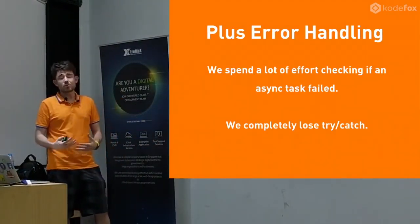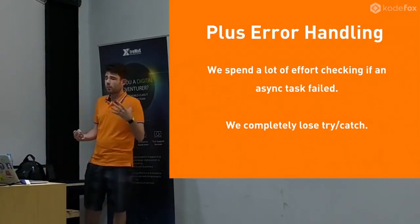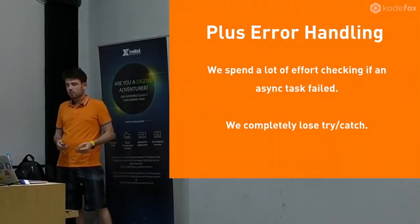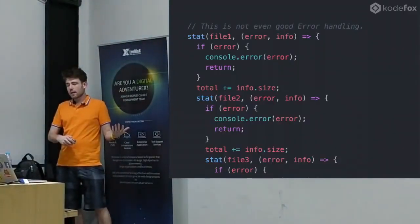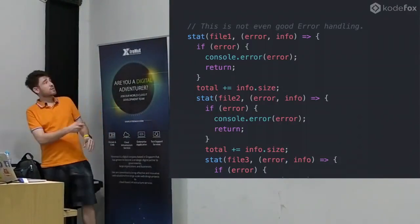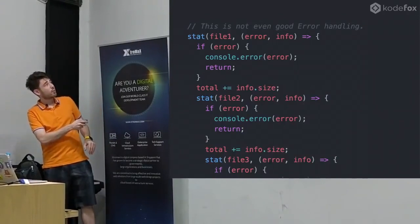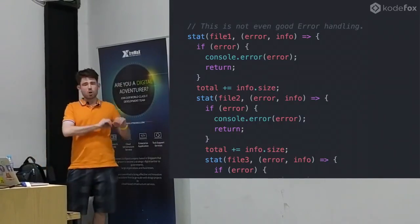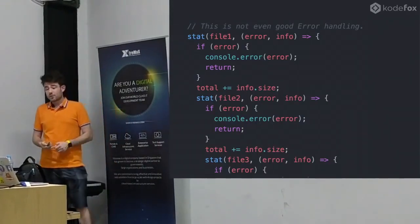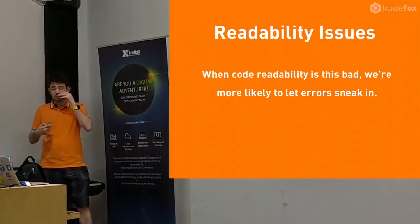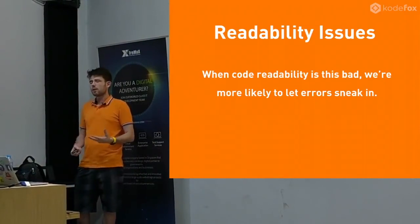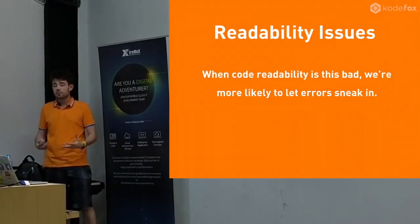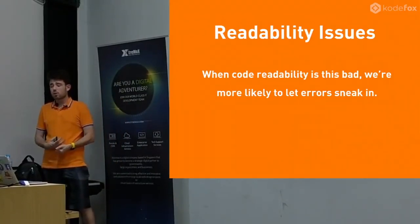And then there's error handling, which we didn't even look at yet. What do you do? We spend a lot of effort just checking if there's an error when we've read file one but file two has already completed successfully. If we look at the same example with error handling, it doesn't even fit on a slide. We have to log the error and return — that's not even good error handling, that's just the minimum. We have to do it every time, so readability is terrible. Systems become difficult to maintain, difficult to read, and it's easy for bugs to sneak in.